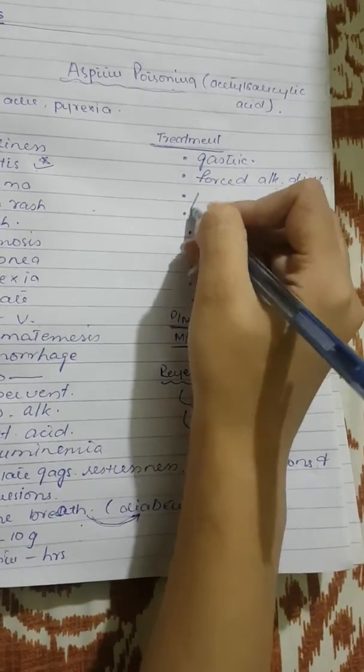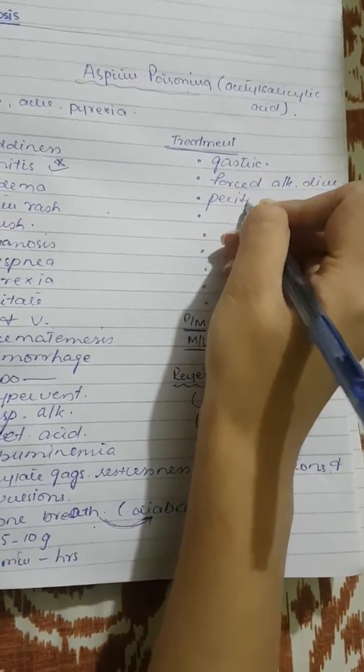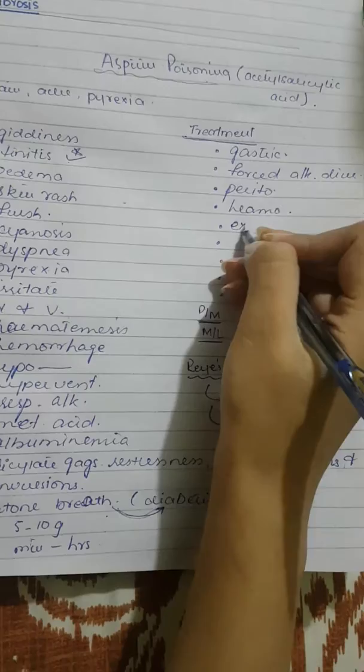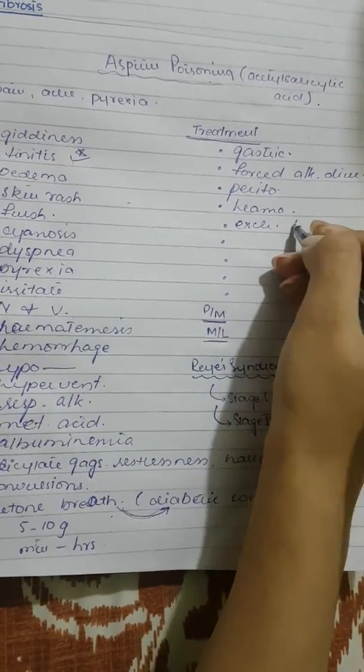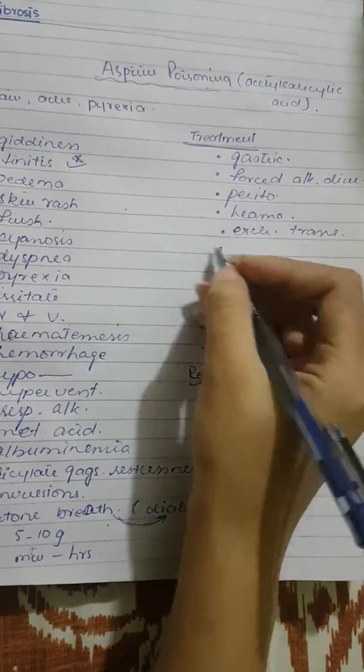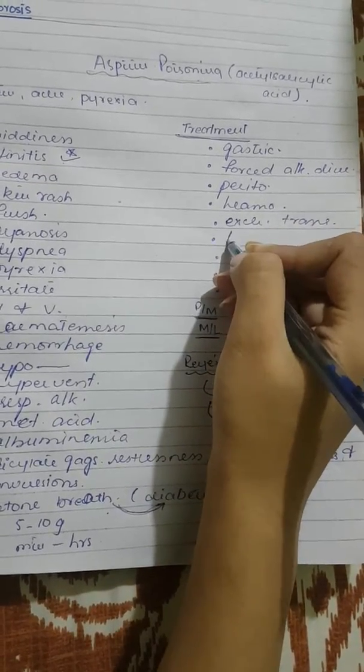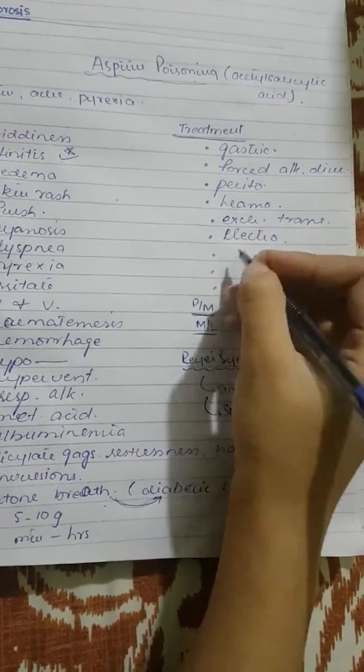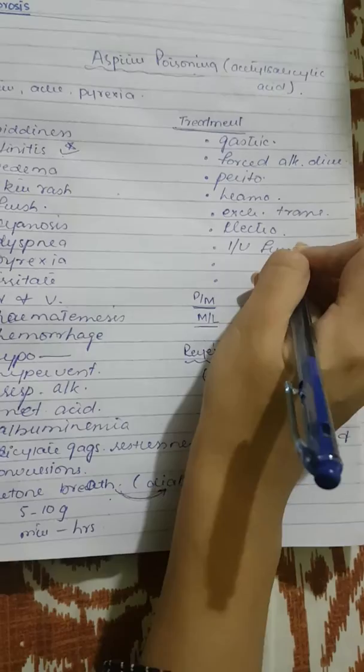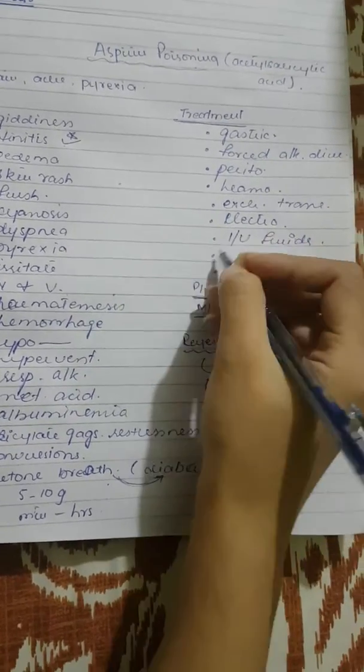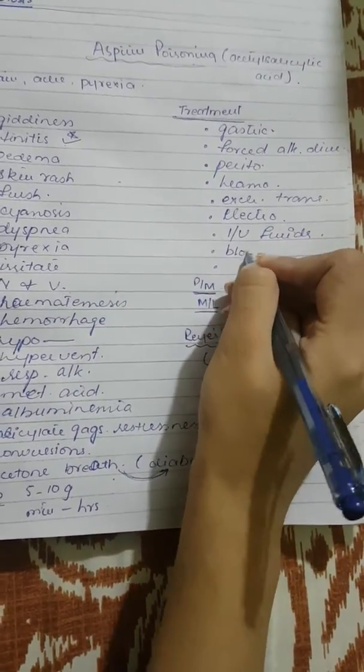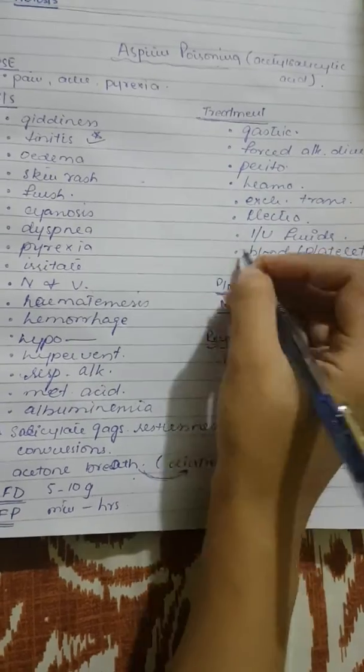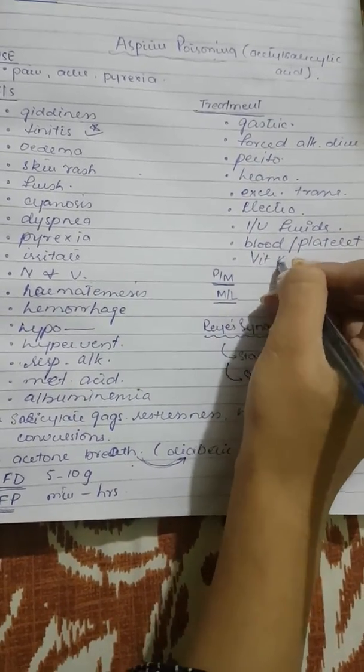It may be done by peritoneal dialysis, hemodialysis, it may be done by exchange transfusion. It may be done by balancing the electrolytes, especially potassium, and giving IV fluids and blood or platelet transfusions and obviously vitamin K because of bleeding.